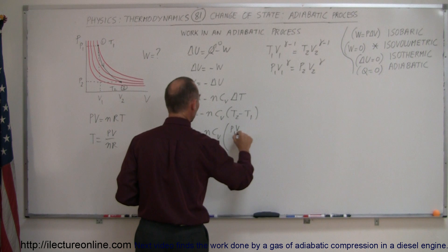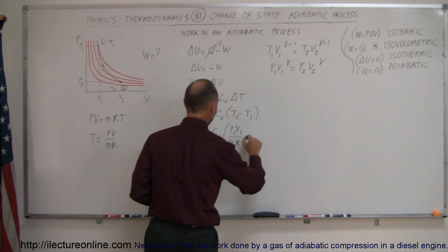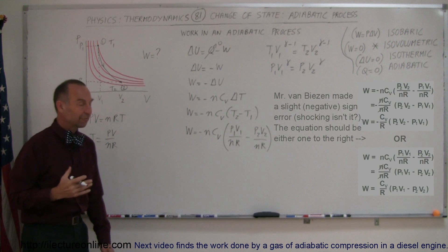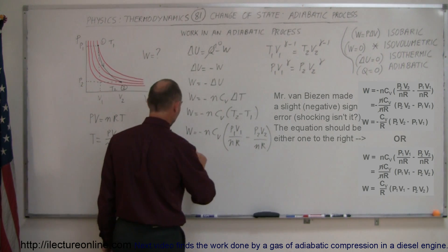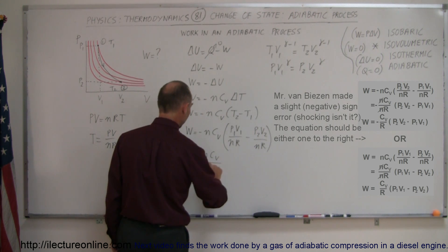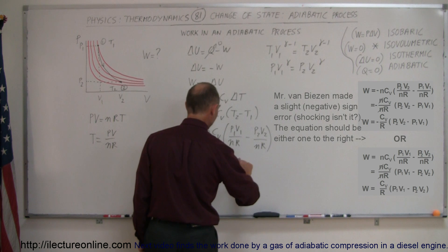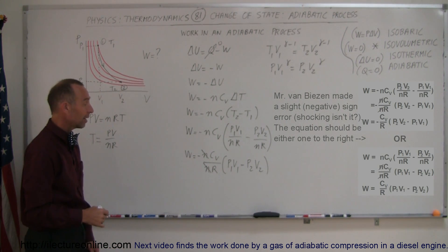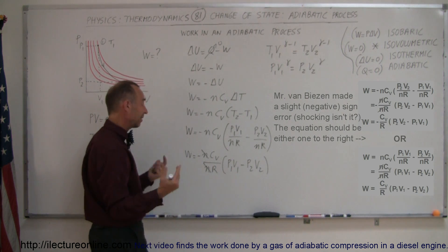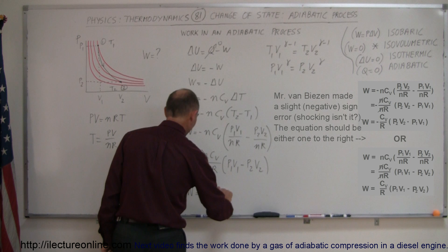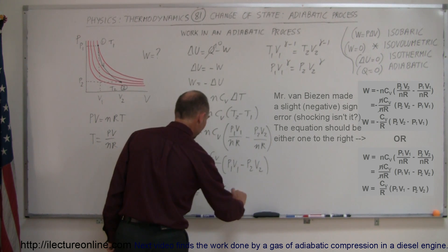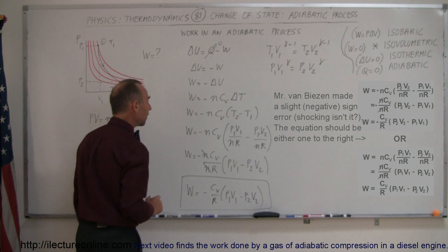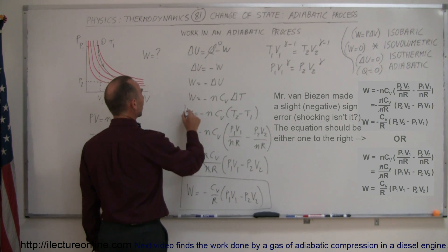When we do that substitution, the work done becomes minus N C_V times (P1 V1 / NR − P2 V2 / NR). We can factor out NR, so the equation becomes W = −(N C_V / NR) times (P1 V1 − P2 V2). The N's cancel, giving us W = −(C_V / R) times (P1 V1 − P2 V2). This gives another way of finding the work done in an adiabatic process.